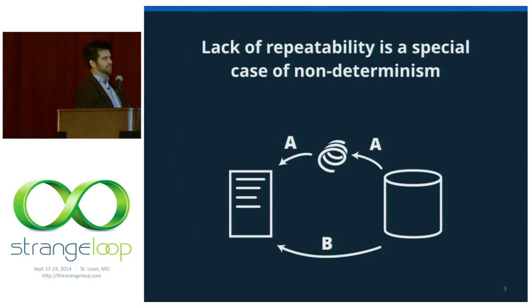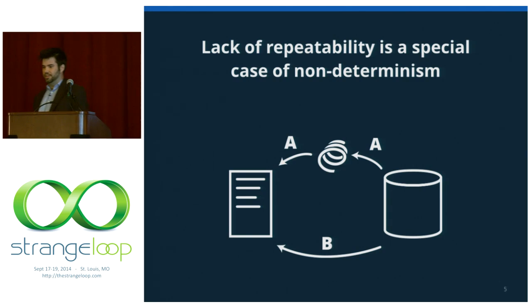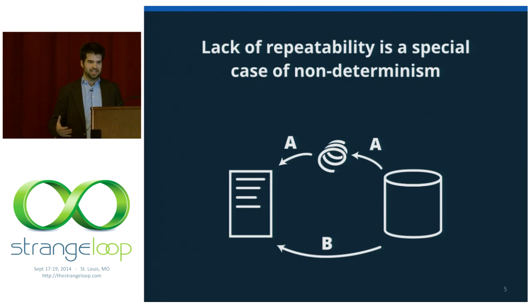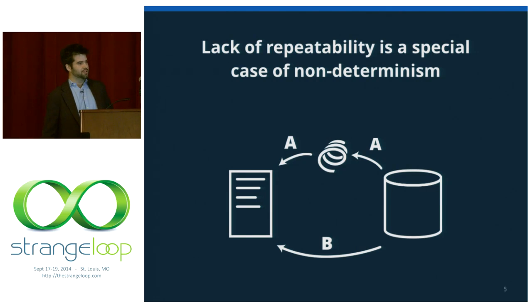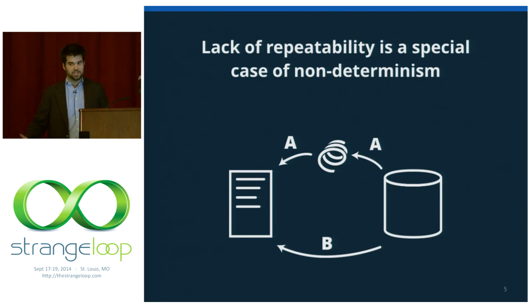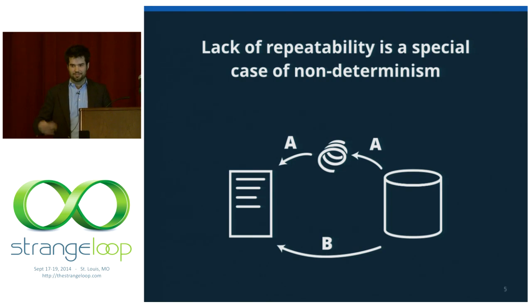The surface level problem is that we have no repeatability in our debugging. The real problem is that the messy, dirty universe has intruded on our beautiful, pristine land of pure functions. The execution history of this system is not a pure function of its inputs. There's a source of entropy, a source of randomness which you do not control, which is the network. This problem is especially apparent in distributed systems, but you can get the same kinds of bugs — just replace all the words with threads, discs, or you name it.